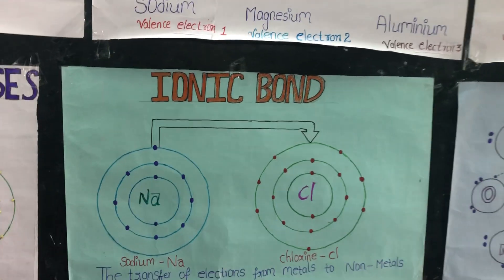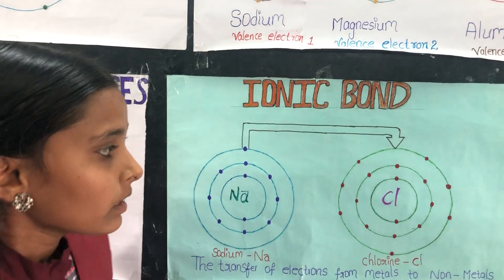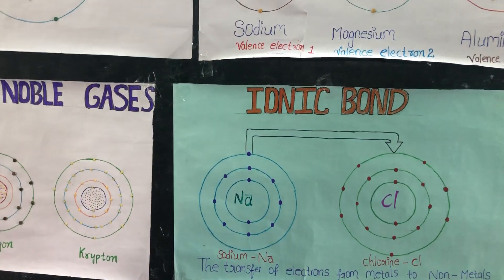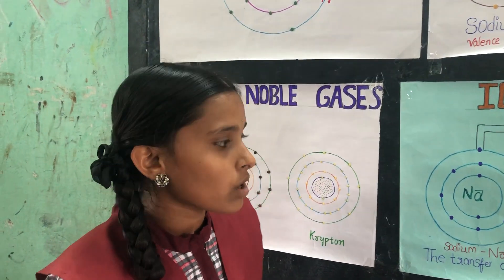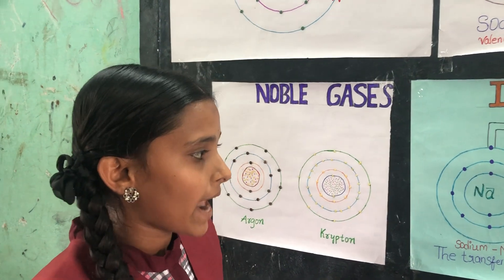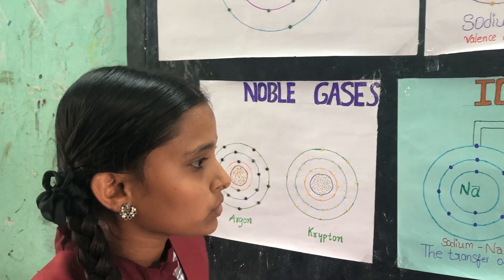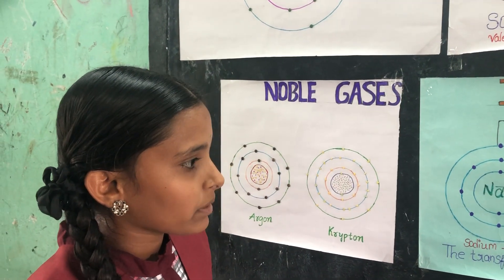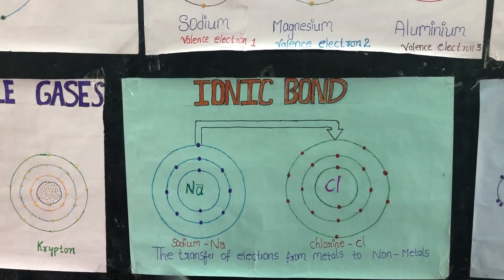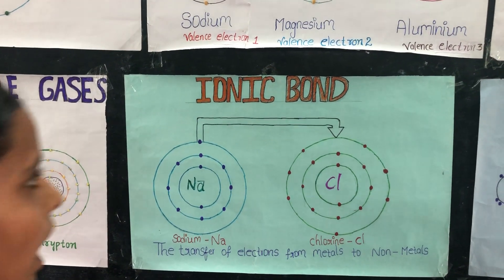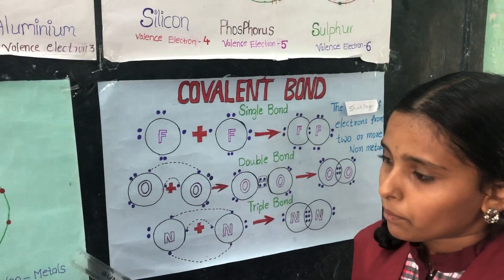When 2 atoms come close together, the electrons of each atom can experience the force of the nucleus of the other atom. Electrons in the valent shell are responsible for forming a bond between the atoms. In chemical bonding, there are 2 types of bonds: ionic bond and covalent bond.